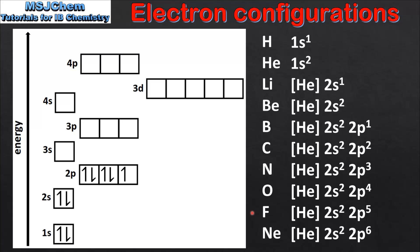Moving on to fluorine which is He2s2 2p5. And then we come to the end of period 2, which is the noble gas neon. This has the condensed electron configuration He2s2 2p6, and we have now completed the 2p sub level.